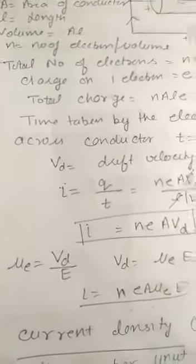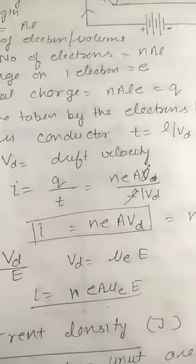And we know that mobility is equal to drift velocity per unit electric field. So in this way, drift velocity is equal to mobility into E. And we put the formula for the drift velocity. And now the current is found in terms of drift velocity.